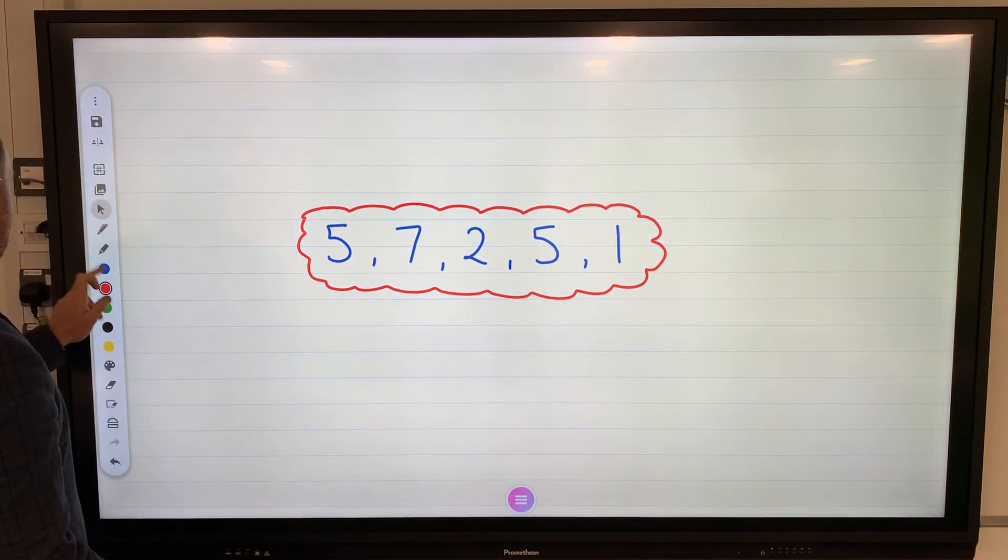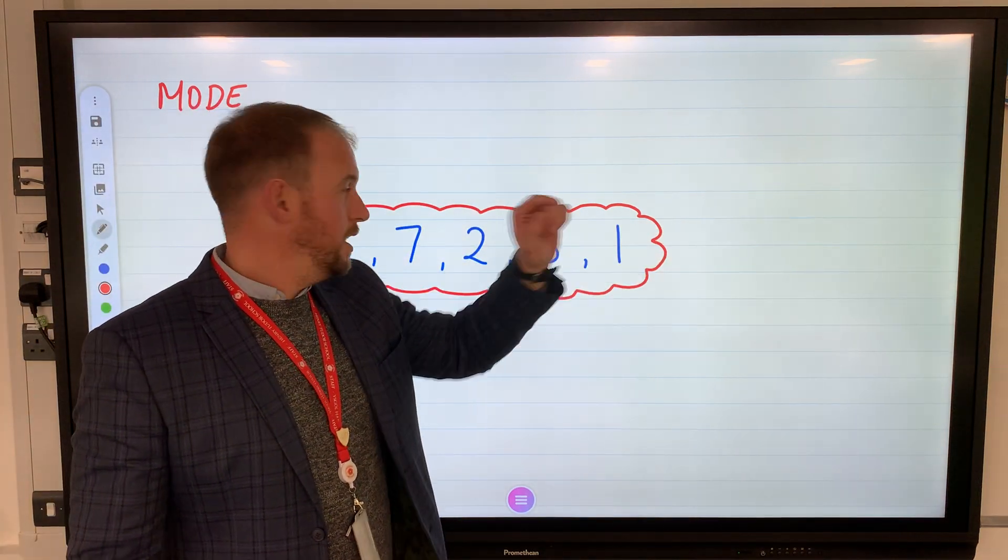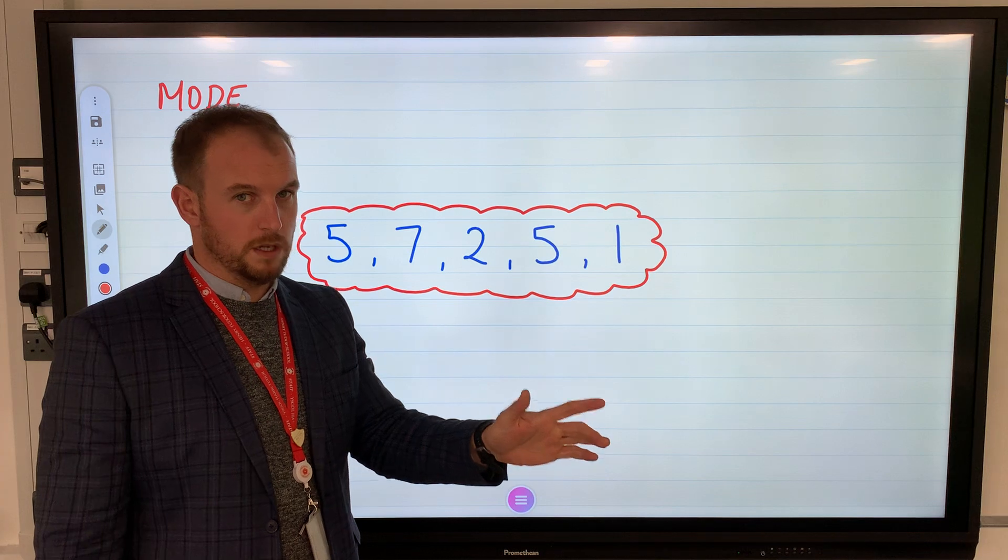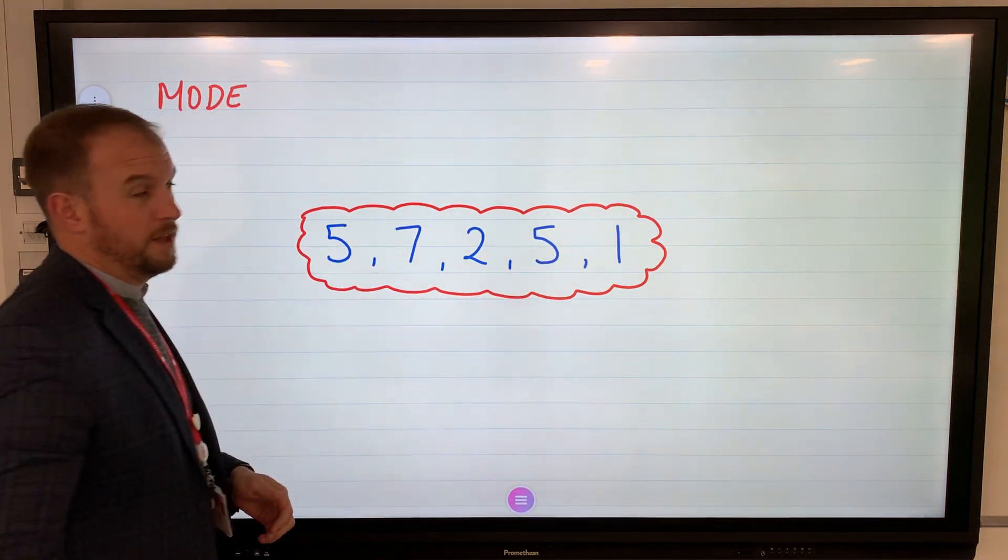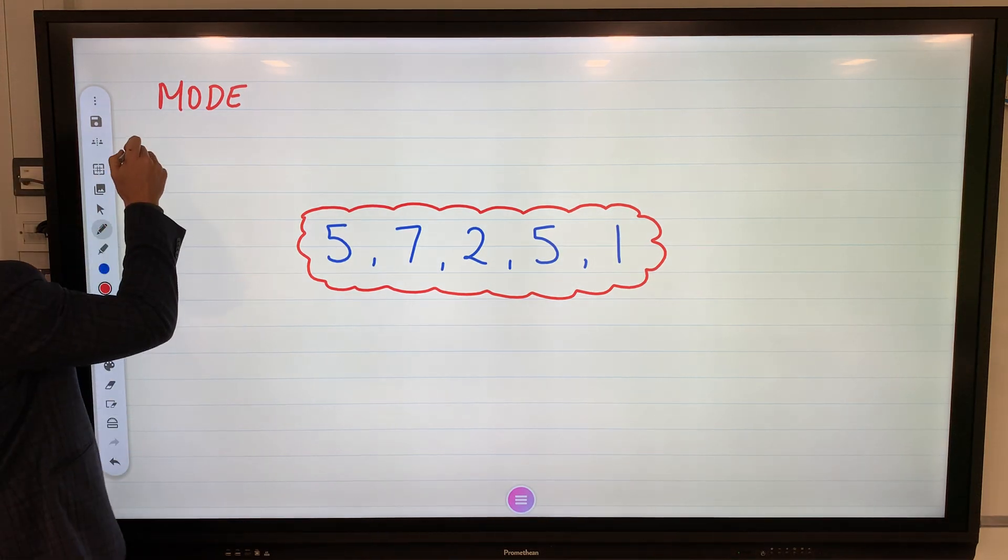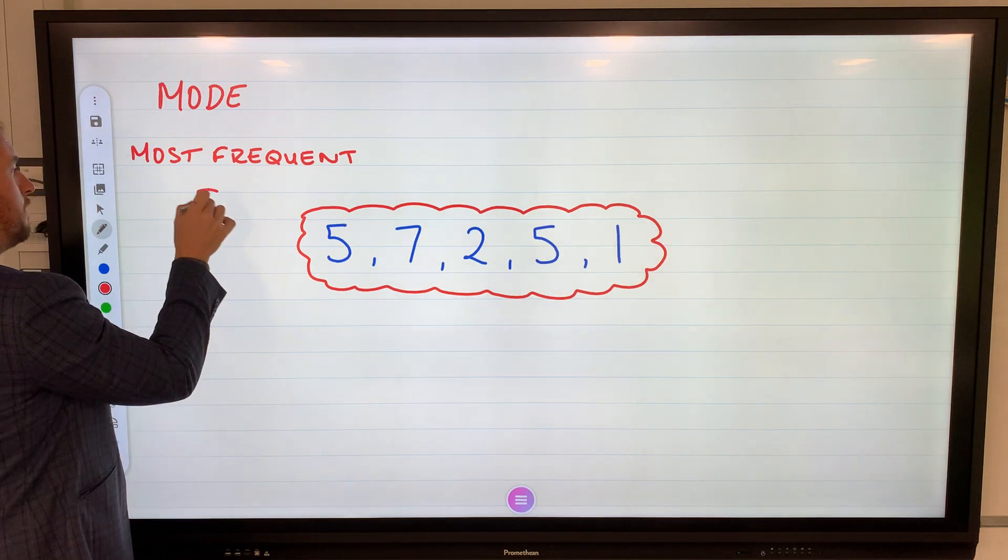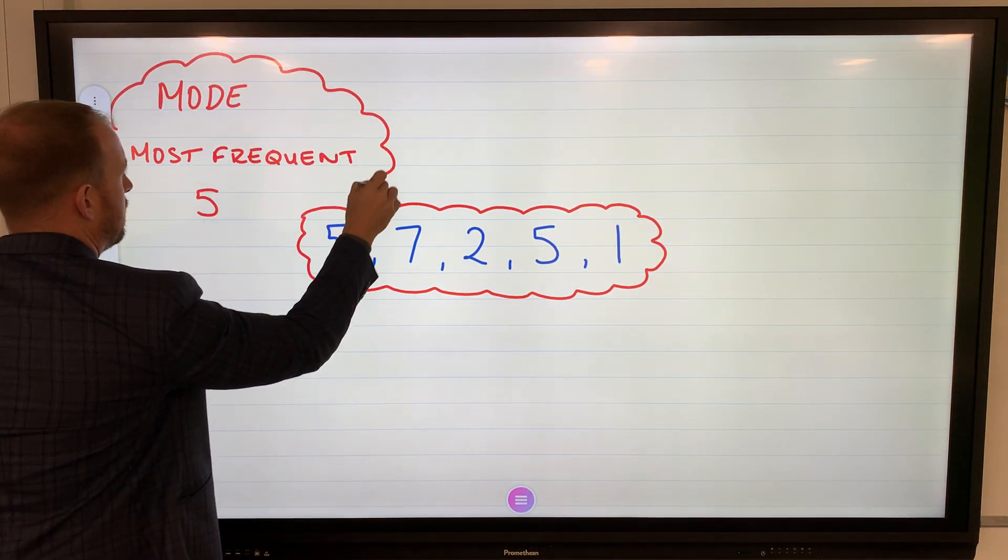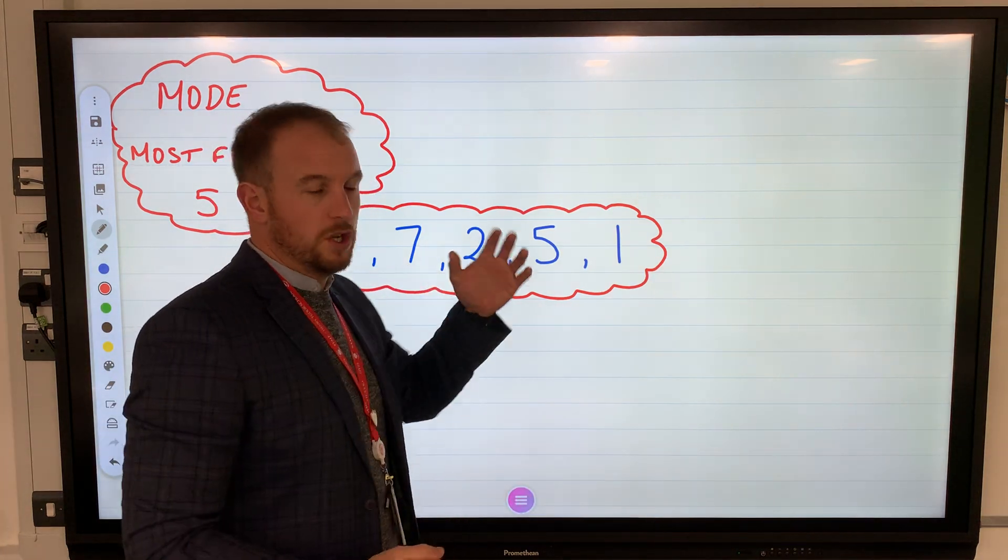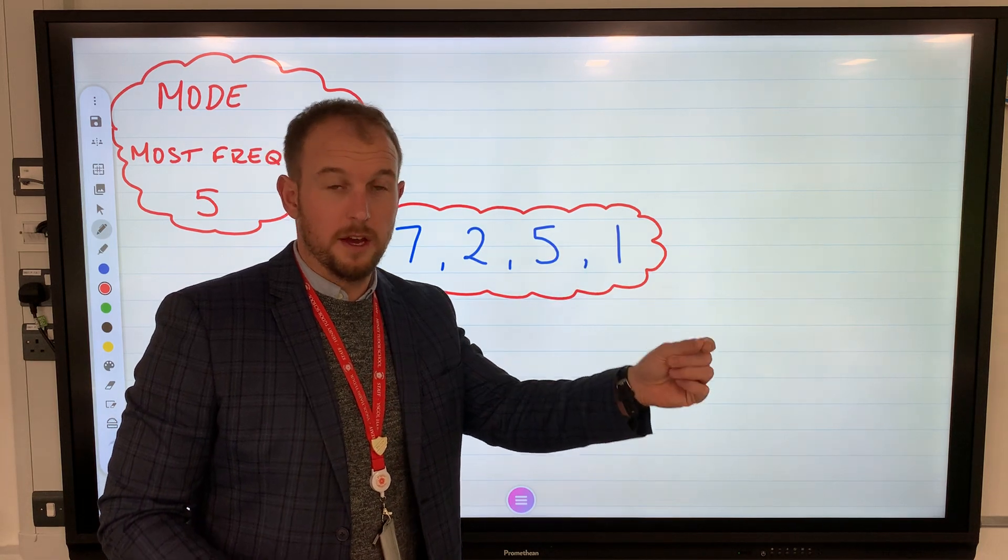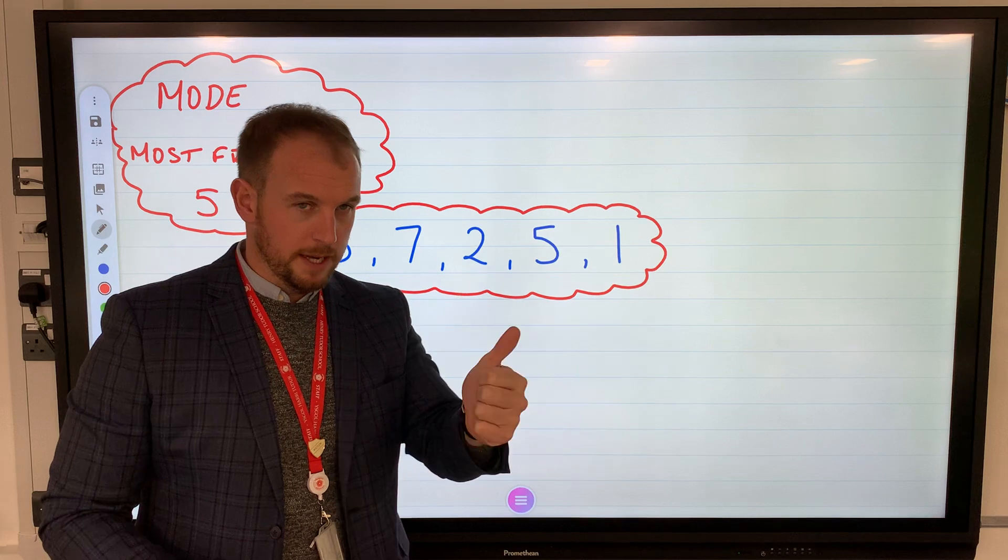Let's start with the mode. The mode of this data set is the number that appears the most, the most frequent number. Looking there, I have a mode of 5 because as you can see, 5 appears more than any other number. So mode is the most frequent number, and that would be 5. I'm going to keep that all together as the mode. Mode normally is the easiest one to work out. If there's no specific number that appears more than any other, then there's no mode and you are expected to write 'no mode.' But obviously, if not, write the one that appears the most.